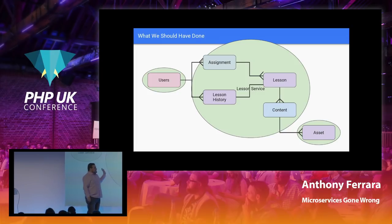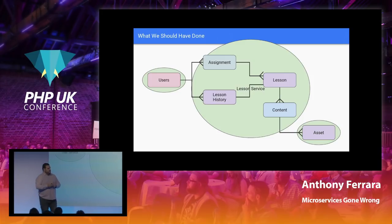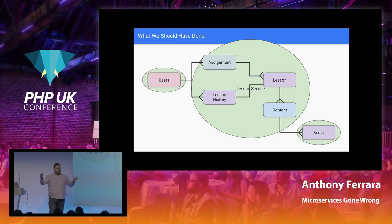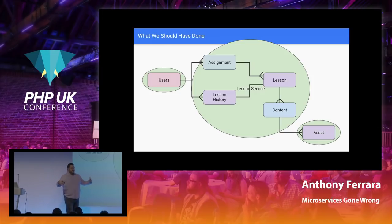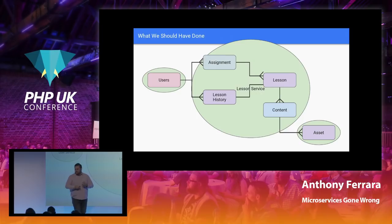What we refactored to at the very end: have a smaller number of services where domain boundaries are very narrow and well-defined. One of the guys on our team coined the term 'microlith.' Start your services as microliths — as large as possible — because it is far easier to split apart a large system than it is to stitch two dynamic systems together, especially when there are lots of dependencies and network traversal between them. Build it large, and then when you need to split something out, do that.